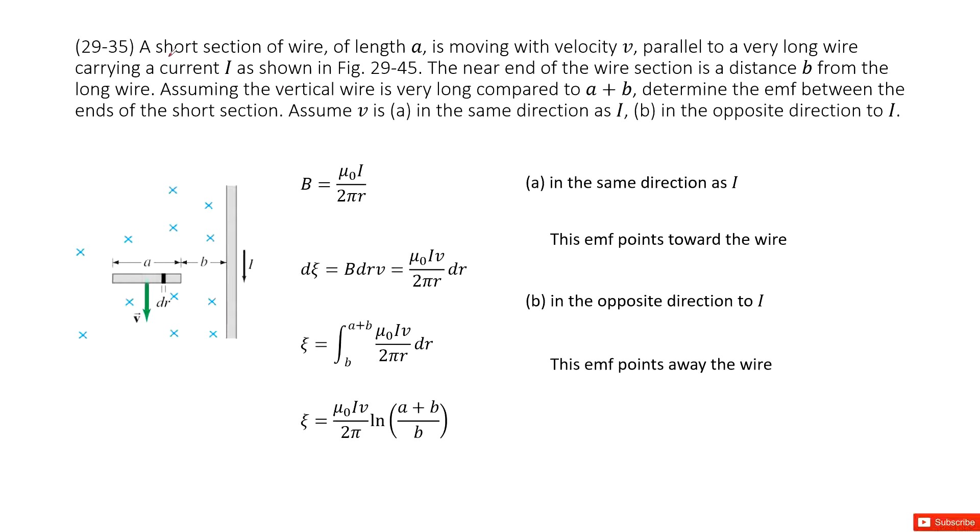There we can see we have a short section of wire. The length is a and is located at distance b with another wire. The long wire carries current I. I ask you to find the EMF between the ends of short sections in the same direction or in the opposite direction.